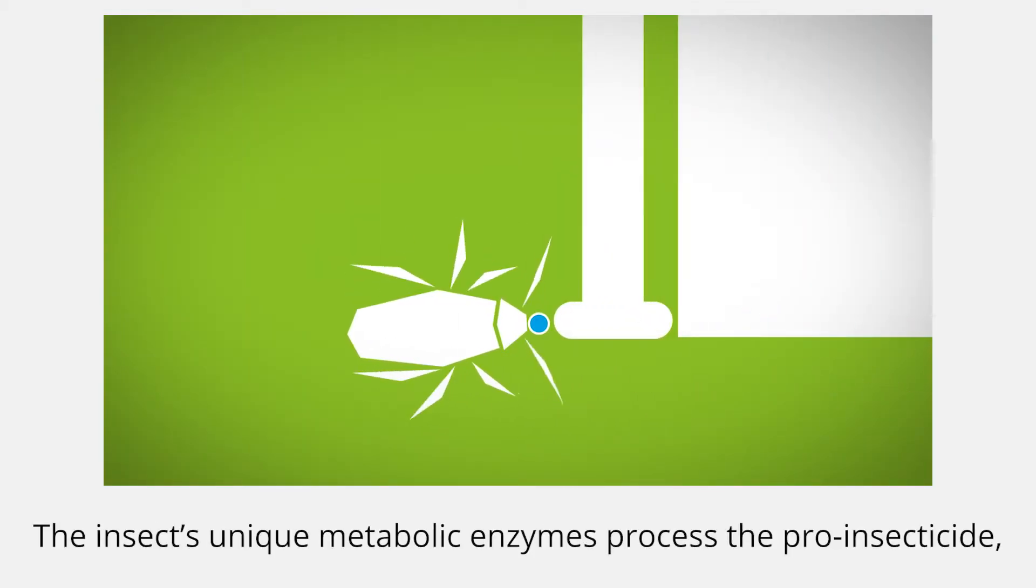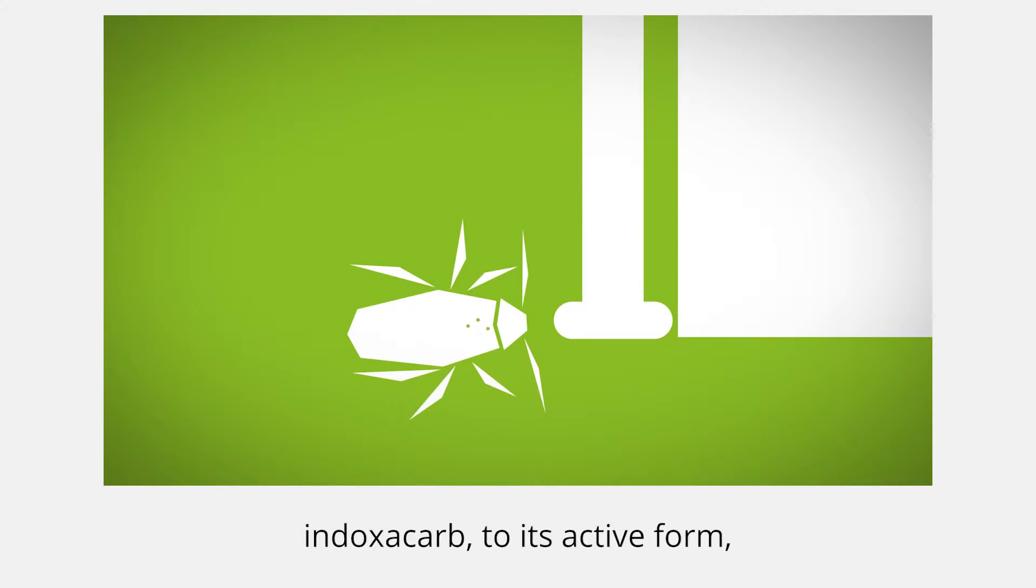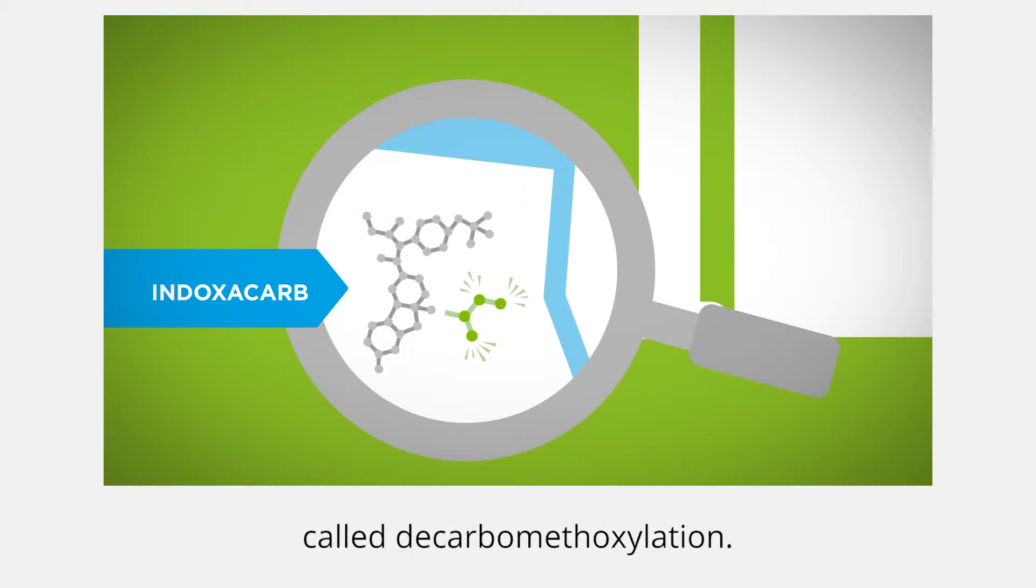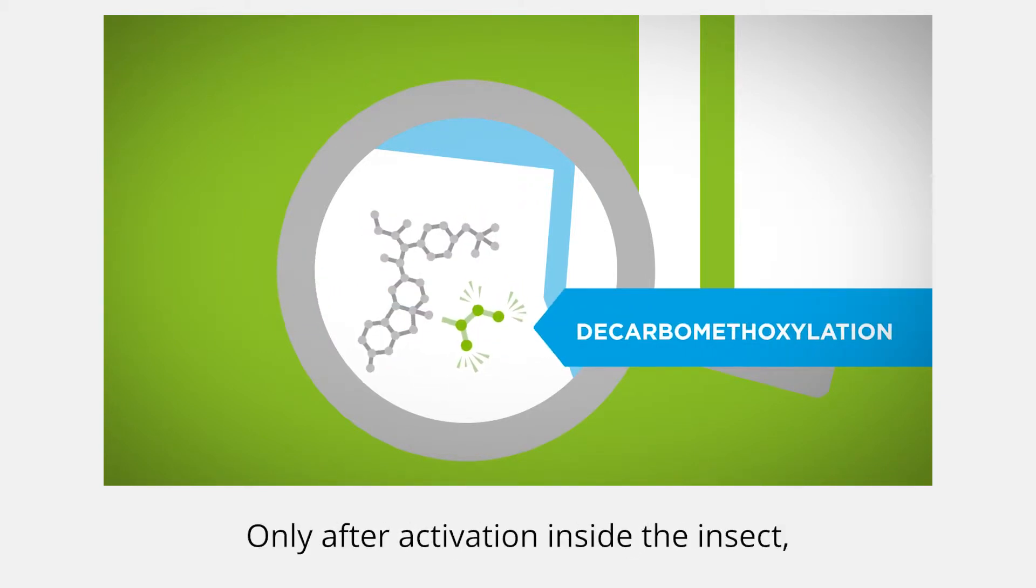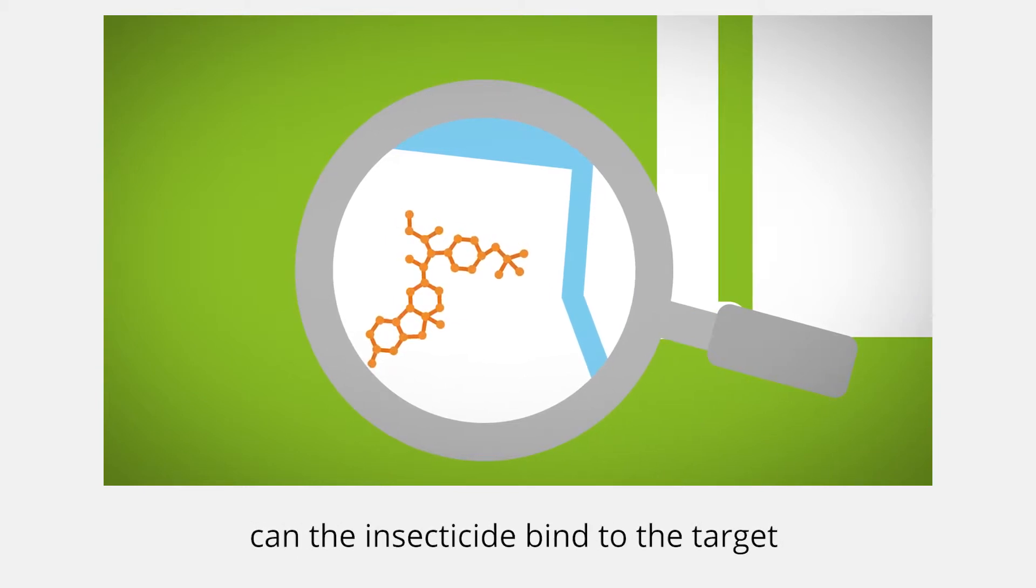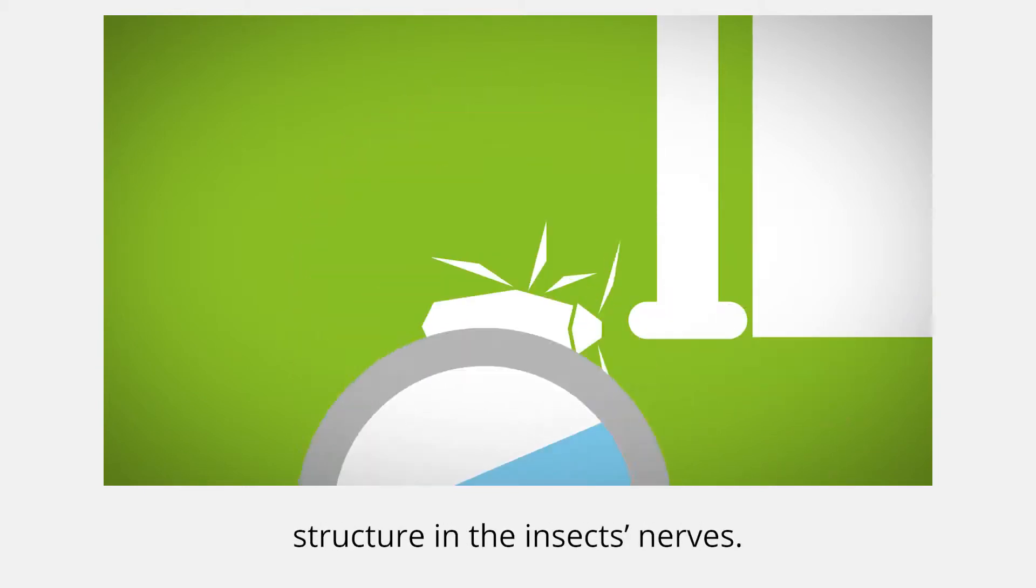The insects' unique metabolic enzymes process the pro-insecticide indoxacarb to its active form by removing a small part of the molecule called decarbomethoxylation. Only after activation inside the insect can the insecticide bind to the target structure in the insect's nerves.